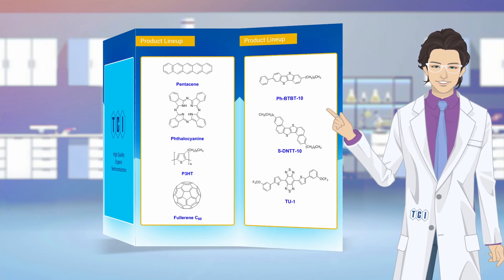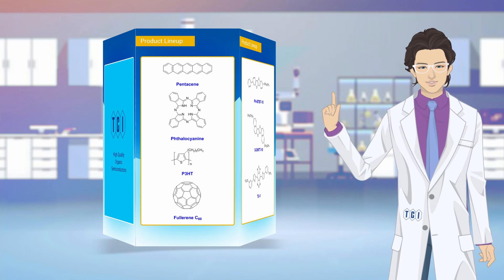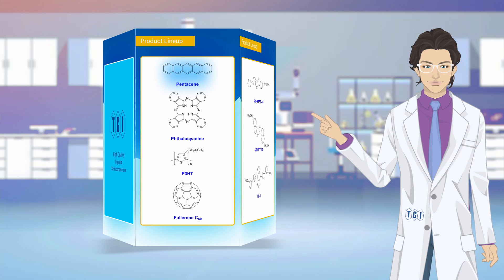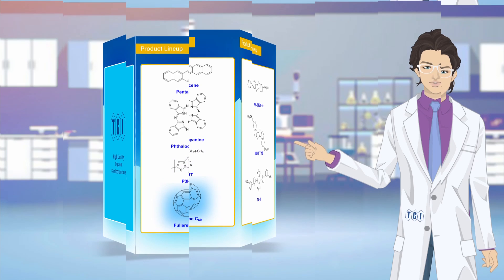Let us take a look at the product lineup of fundamental high-quality organic semiconductors, such as pentacene, phthalocyanine, P3HT, and fullerene.